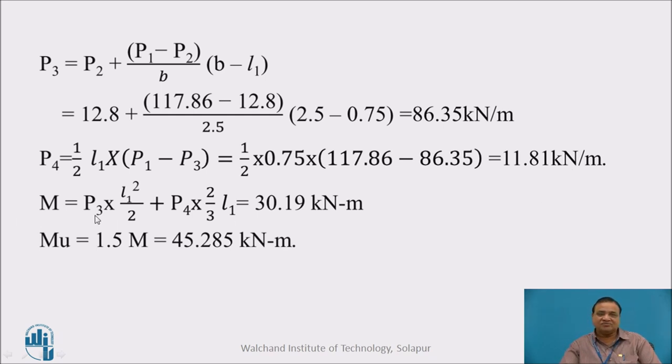Bending moment M at the face of the stem is given by P3 into L1 square by 2 plus P4 into two-third L1, which works out to be 30.19 kilonewton per meter. MU is 1.5 times M. This completes analysis of toe slab.